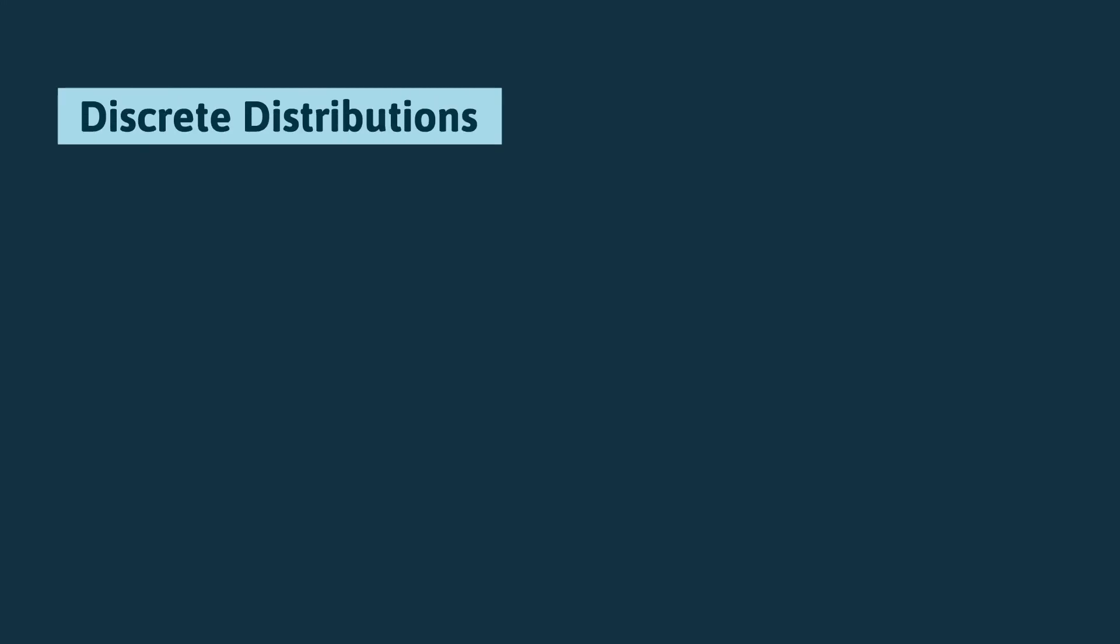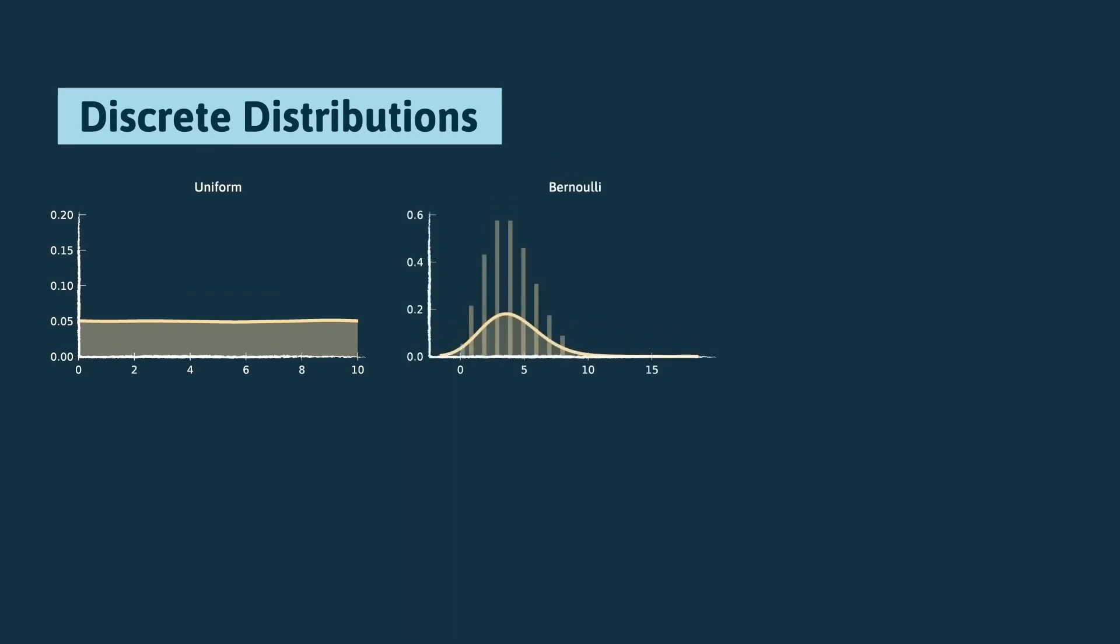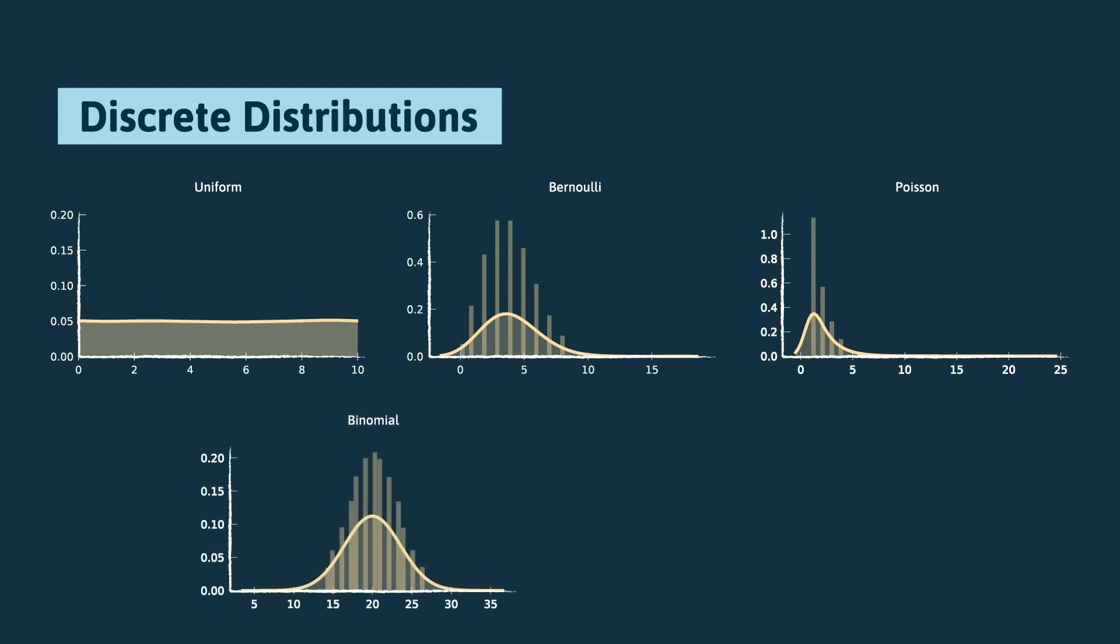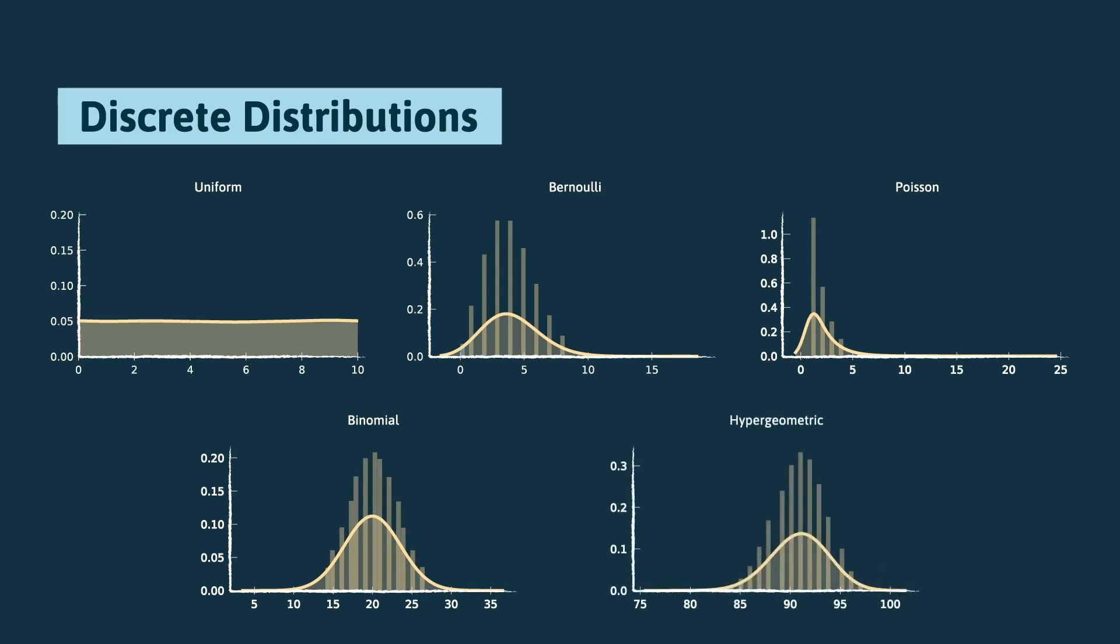Among the probability distributions, some are of particular interest given their correspondence to real phenomena. The uniform, to represent equal frequent values. The Bernoulli, to represent binary variables that assume one of two possible values. The Poisson, to express the probability of occurrence of a set of events in fixed intervals. The binomial, to describe the probability of k successes in n draws with replacement, or the hypergeometric, similar to the binomial, but for draws without replacement.